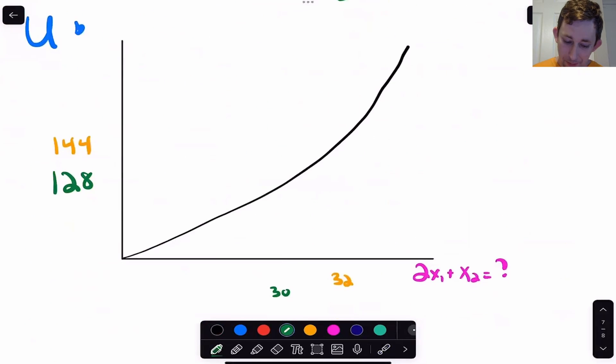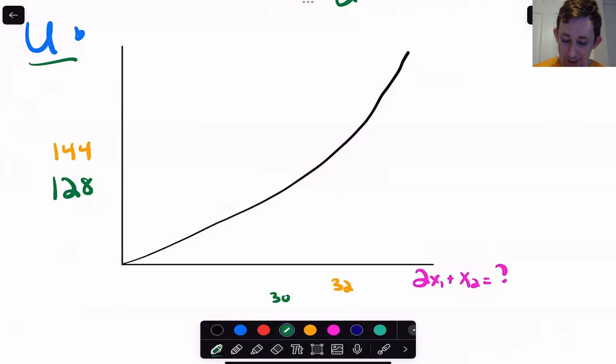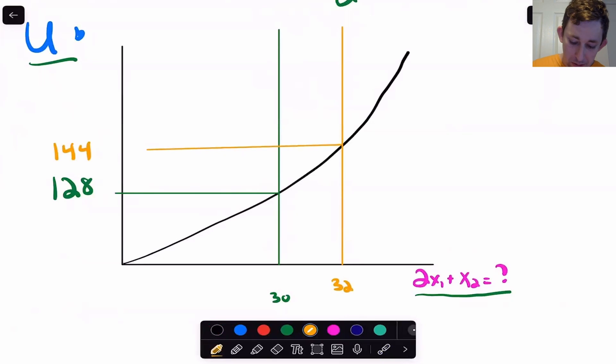The reason this works sort of graphically is if we think about our utility on the y axis and the amount of money or the budget on the x axis, at first we had a budget of $30. When we had a budget of $30, we had a utility level of 128. Maybe this is what our utility looks like for any given budget. When we increased our budget to 32, we were able to go to 144. If we connected these two points, this slope would be eight, which is our lambda star. Now really slope is calculated sort of at each point specifically, so we've got a lambda star here and we've got a lambda star here. But basically if this utility function is linear enough, then we've approximated it with lambda star is equal to eight.